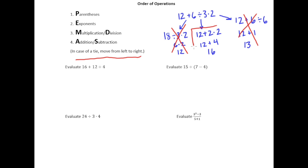So the correct way to do this problem gives us 16. Now let's work through a few examples using this order of operations. For 16 plus 12 divided by 4: addition is priority 4, division is priority 3, so I do the division first. 12 divided by 4 is 3, and then 16 plus 3 gives me 19.